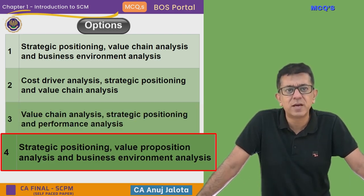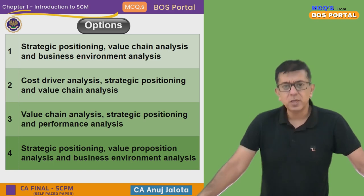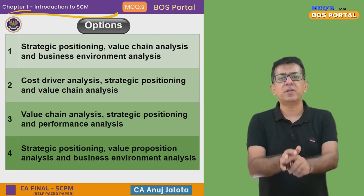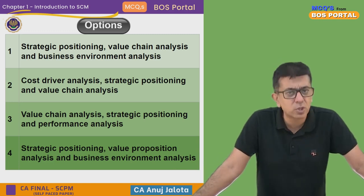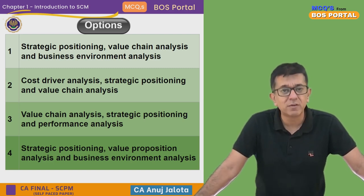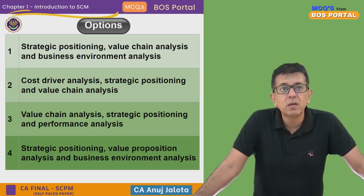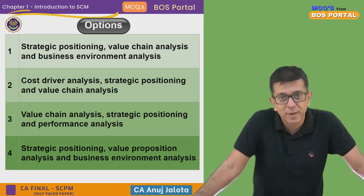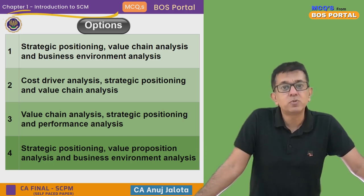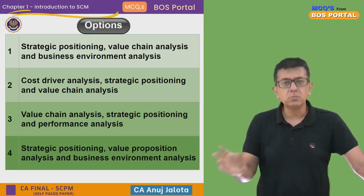First of all, what is strategic cost management? It is basically cost management techniques which are aligned to the strategies of the company. The ultimate aim of every business should be to achieve the visions we have in mind, and to achieve them we require a lot of techniques — one of them is cost management. Cost management is often confused with cost reduction, but it is not that. Sometimes you need to increase the cost to get more profit.